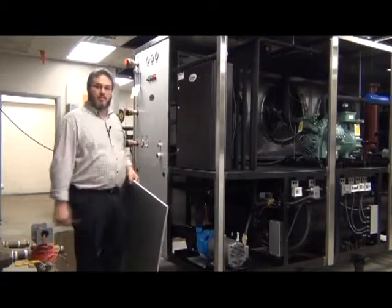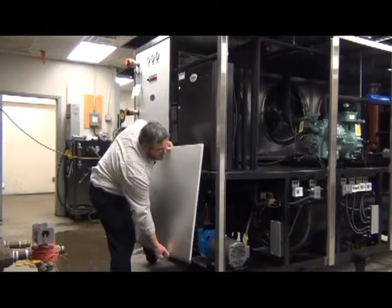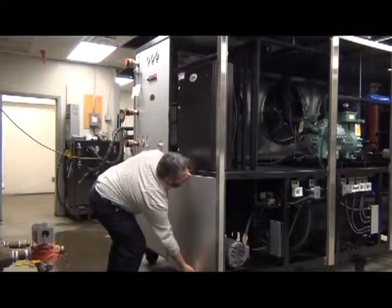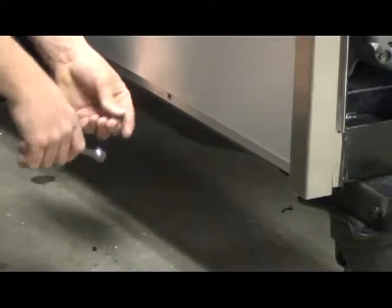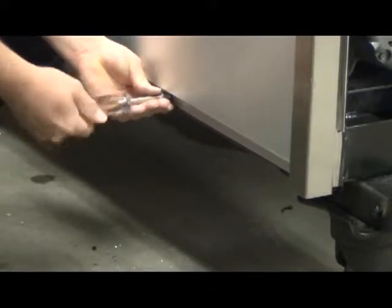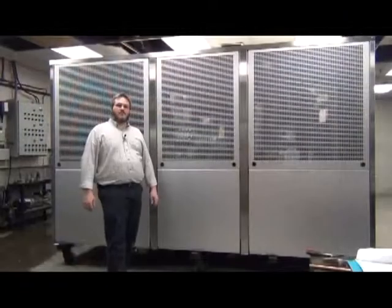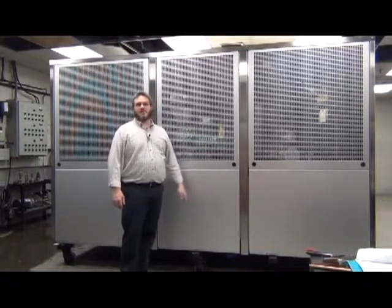Now we'll go ahead and reinstall all of our panels, starting with the bottom panels first. And you just reinstall the panels in the same order, or the reverse order, from where you took them off. Now that we have everything all closed up, this concludes the startup procedure for the chiller.